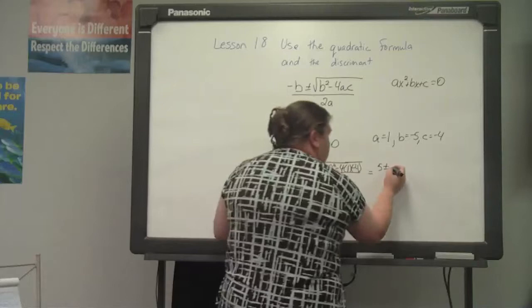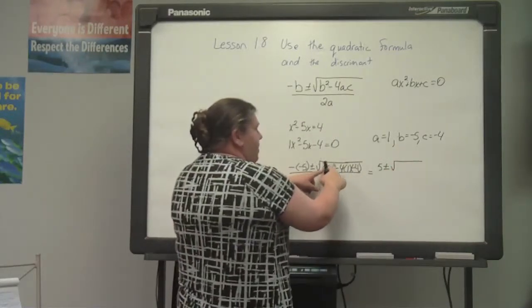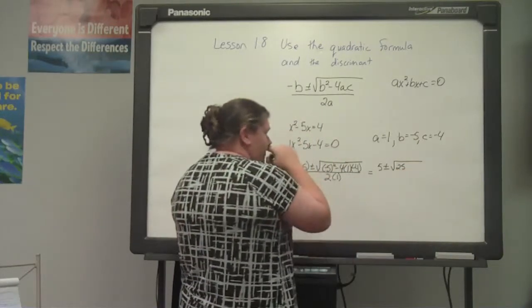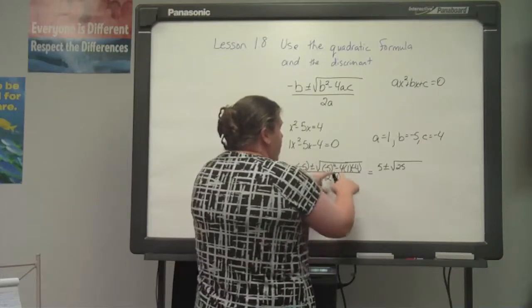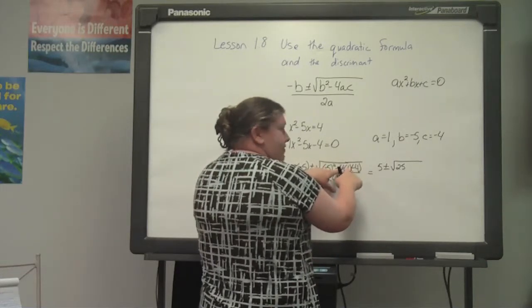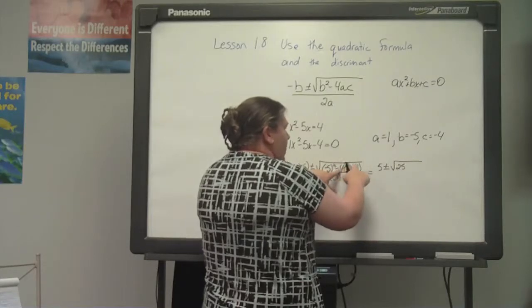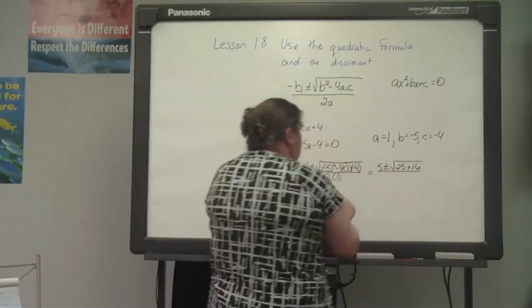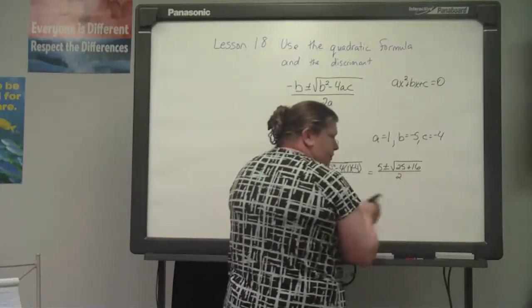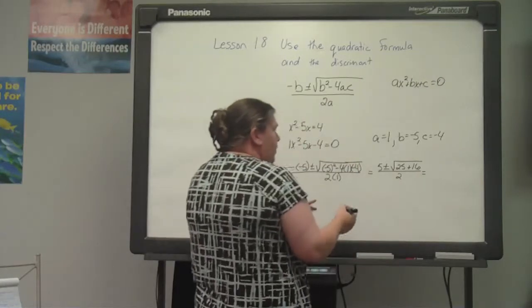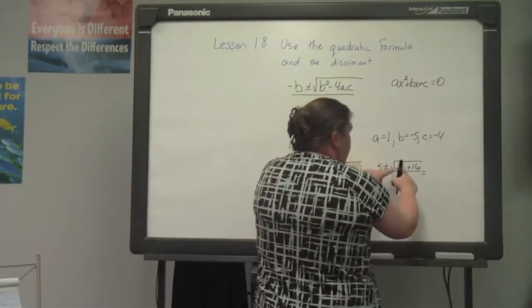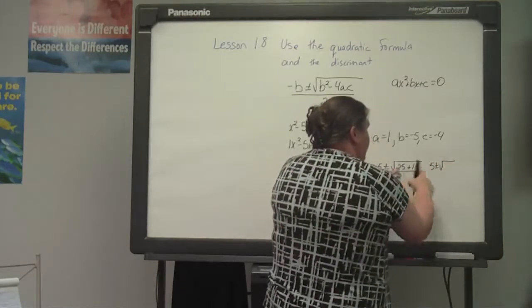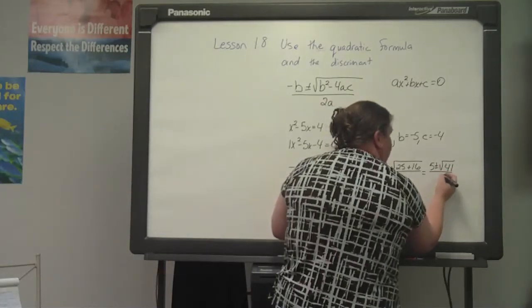Inside our radical sign, negative 5 squared gives us positive 25 because negative 5 times negative 5 is 25. Then negative 4 times 1 gives negative 4, and negative 4 times negative 4 gives positive 16. That is 5 plus or minus over 2 times 1, which is 2. We add 25 and 16, so I have 5 plus or minus — 25 plus 16 gives me 41 — over 2.